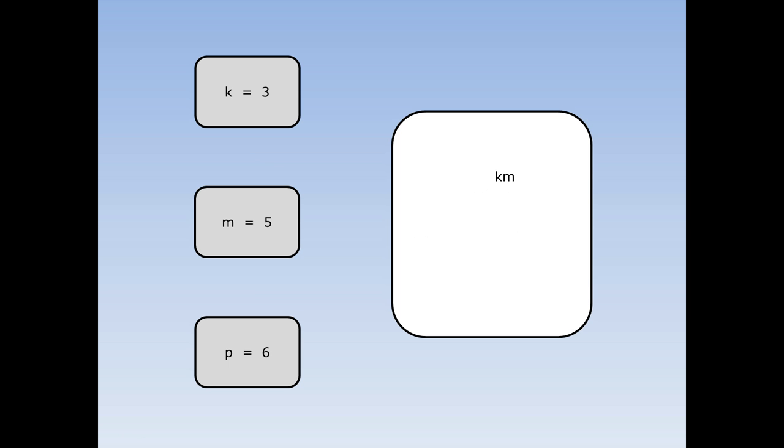What does km equal? km means k times m. We can swap the k for a 3 and the m for a 5. 3 times 5 is 15, so km equals 15.